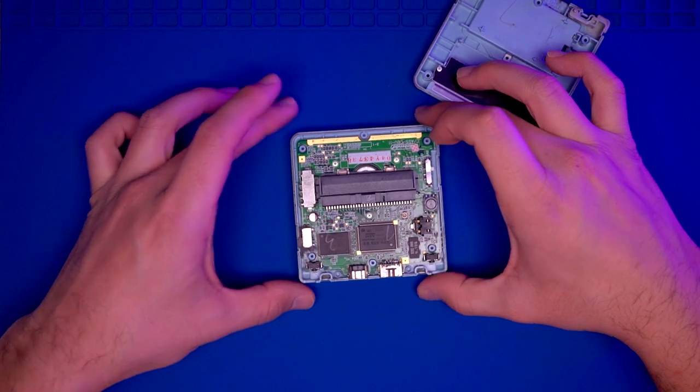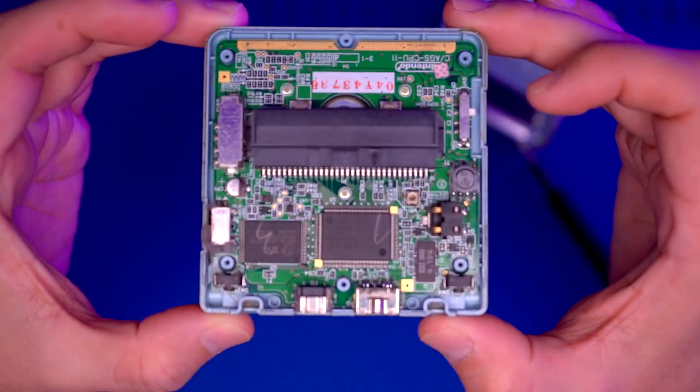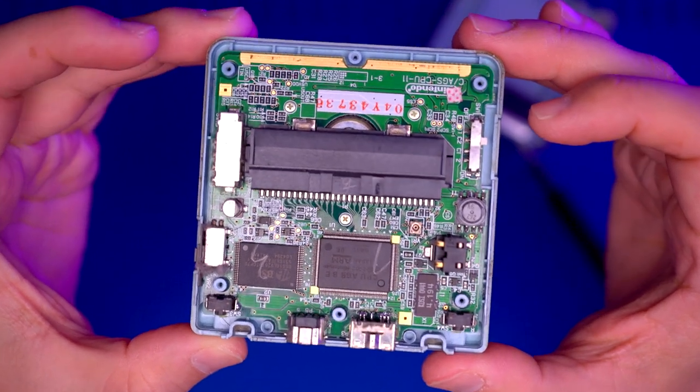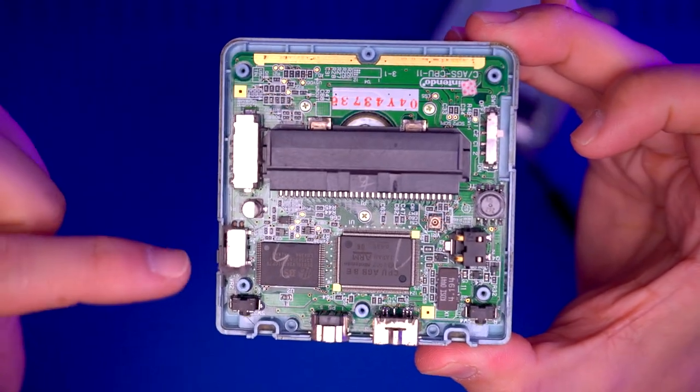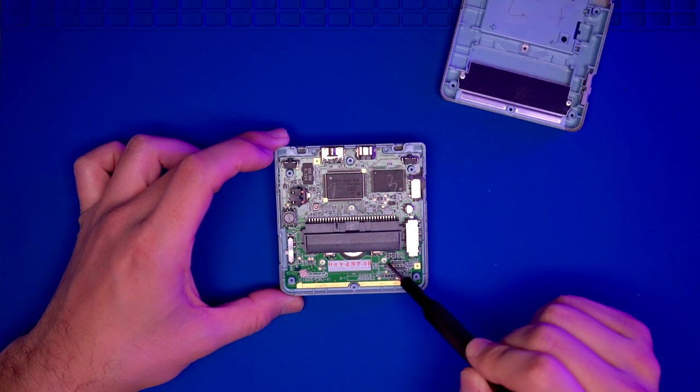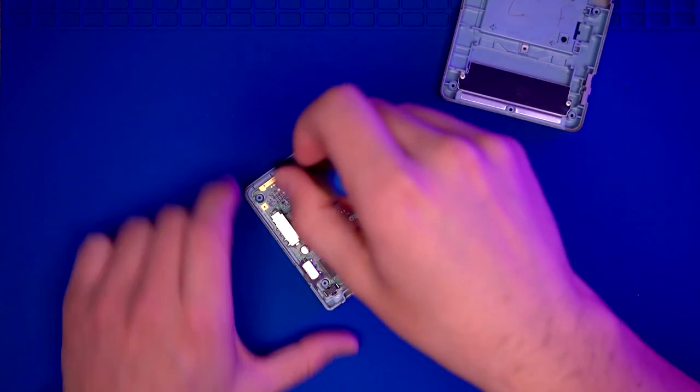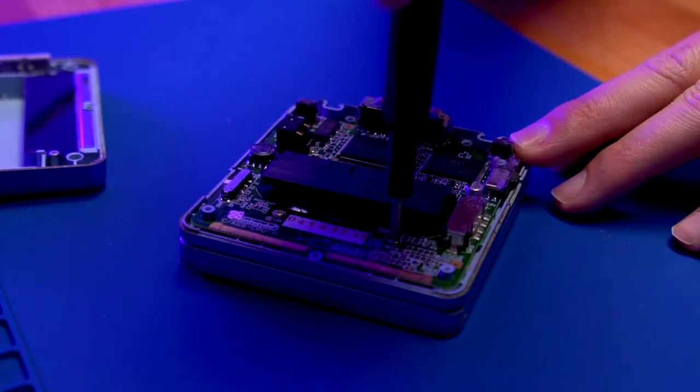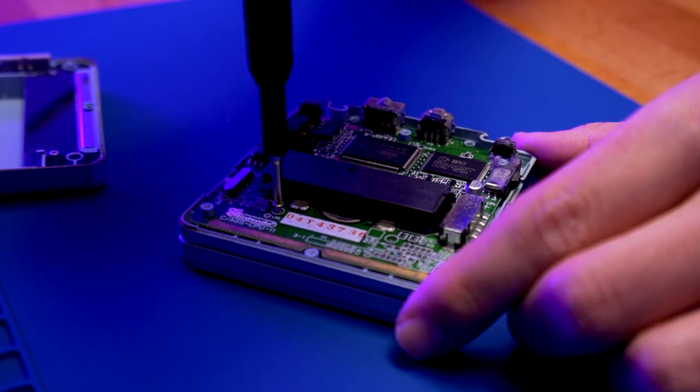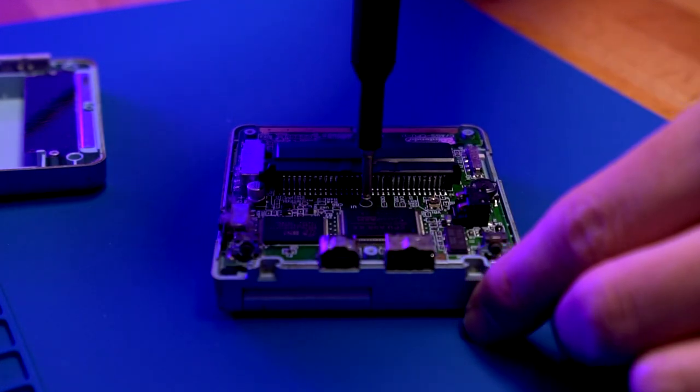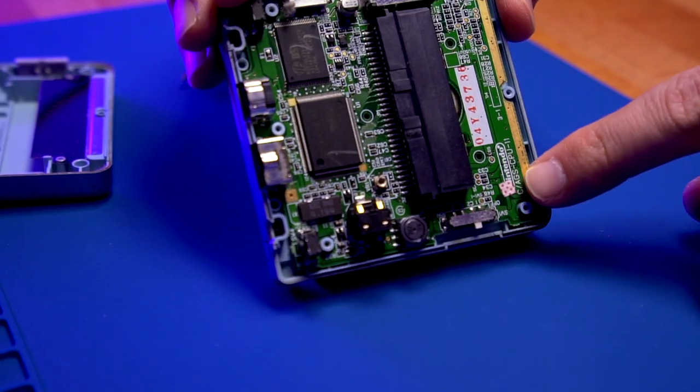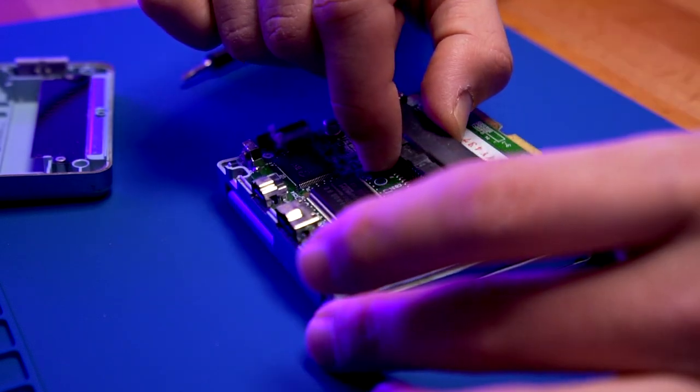If we look at the PCB, it's actually pretty dirty. We're going to give that a good clean once we remove it. You can see all the dust there right by the volume slider. We're going to remove these three Phillips screws.